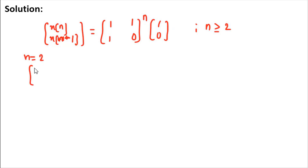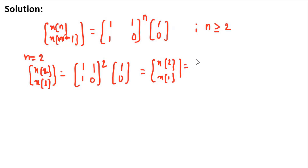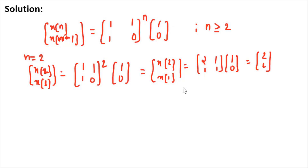When you put n = 2, it becomes [x[2], x[1]] = [[1,1],[1,0]] squared times [1, 0]. When you multiply this matrix, you get x[2] = 2 and x[1] = 1, which matches the initial condition given in the question.